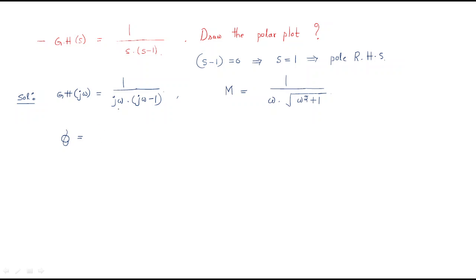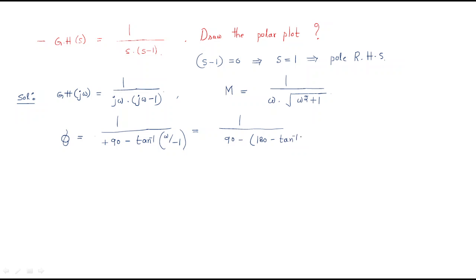Now for the phase — this is a very important model. For jω directly it is +90°. When dealing with (jω - 1), the negative term means the phase contribution changes. It will become 180° minus tan⁻¹(ω/1), since the real part is negative.